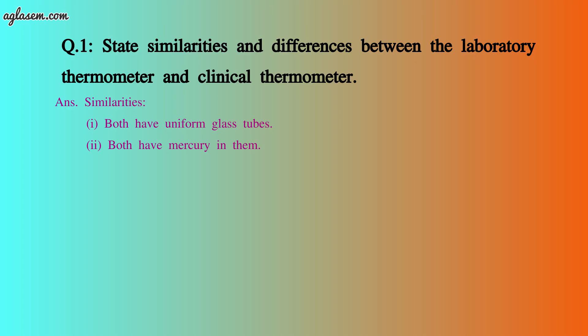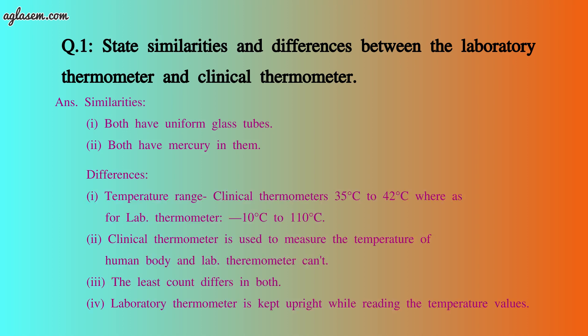The first question is: state similarities and differences between the laboratory thermometer and clinical thermometer. Similarities: both clinical and laboratory thermometers have a long, narrow, uniform glass tube, and the bulbs of both thermometers contain mercury.